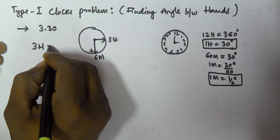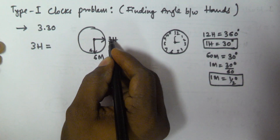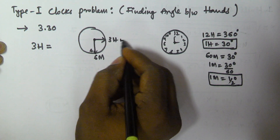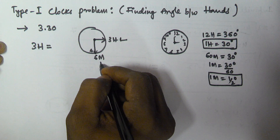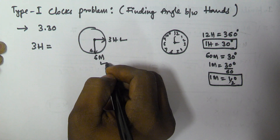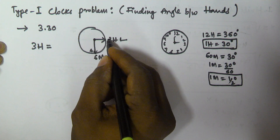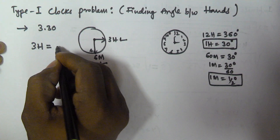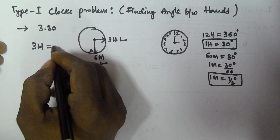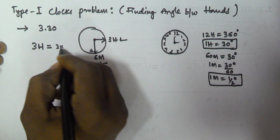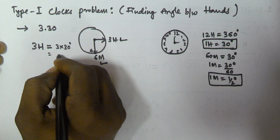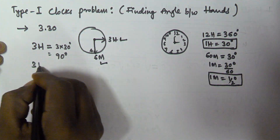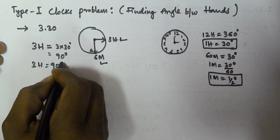So the hours hand is at 3 and the minutes hand is at 6. The difference between 3 and 6 is 3 hours. So 3 hours is equal to how many degrees? 3 multiplied by 30 degrees is equal to 90 degrees. So 3 hours is equal to 90 degrees.